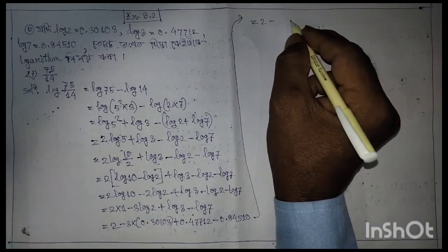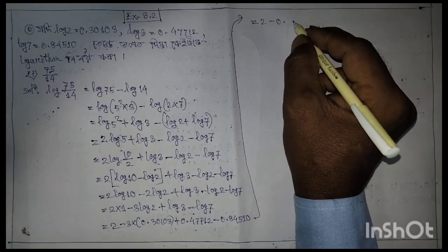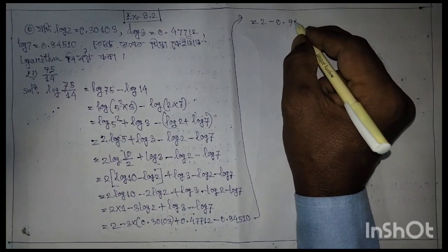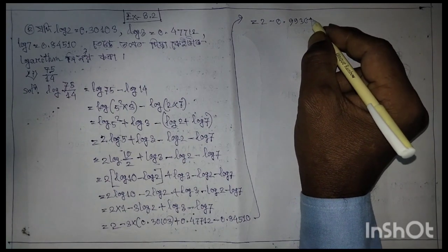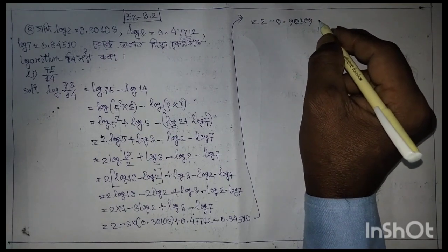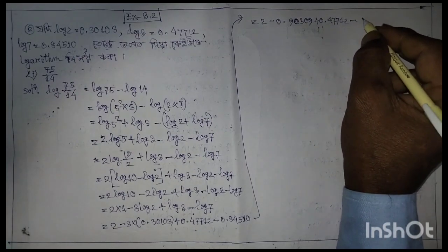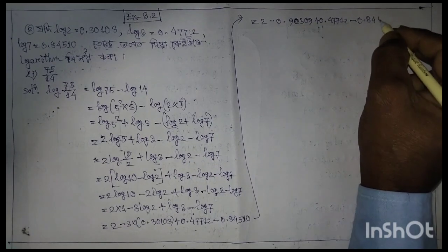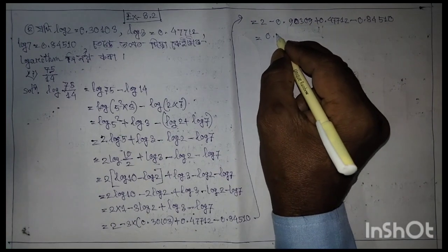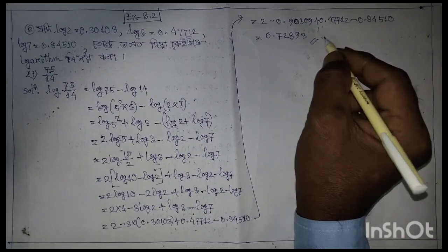2 minus 0.99, nine, nine, three, nine, zero, zero, nine, zero, zero. That gives 0.09 plus 0.47712 minus 0.84510, which equals 0.72893. That is the answer to Question 1.